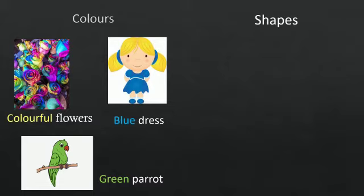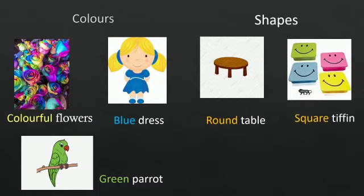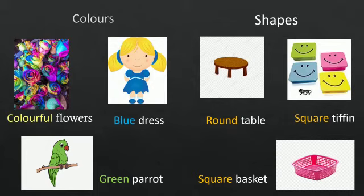Also, the shapes like round table, square tiffin, square basket. Here, round, square are the shapes that describe the naming words table, tiffin and basket. Therefore, round and square are describing words.